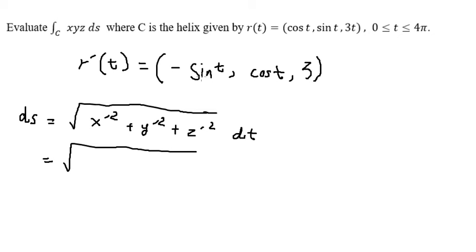So we put negative psi t in here, cos t, and number 3. This one, we get number 1. Three squared, you get number 9. So that means we have the square root of number 10.